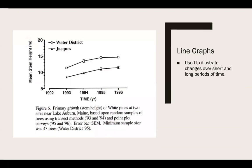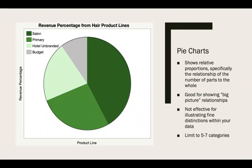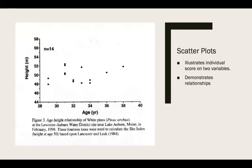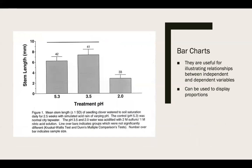Line graphs are great for illustrating changes over time, whether short or long. Pie charts show relative proportions, specifically the relationship of the number of parts to the whole. They are good for showing big picture relationships, but not really effective at showing fine distinctions in the data. You want to limit your categories to five to seven — anything over that will be ineffective. Scatter plots illustrate individual scores on two variables and also demonstrate relationships between the variables. Bar charts are useful for illustrating relationships between independent and dependent variables and can also be used to display proportions.